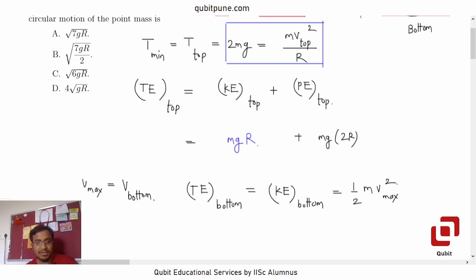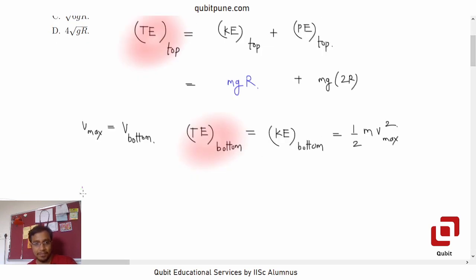And this will be equal to half m v_bottom, or let us say v_max squared. And because energy is conserved in this case, the total energy at the top must be equal to total energy at the bottom. So by energy conservation, therefore by energy conservation, what can we write? Total energy at the top is 3mgR equals total energy at the bottom, half m v_max squared.